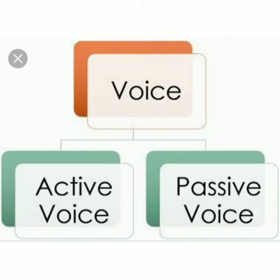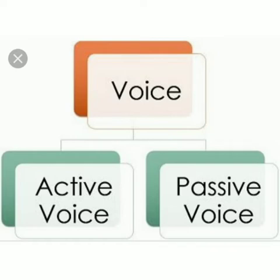The first sentence is in active voice because the hunter, the subject, does the action of shooting the tiger. The second sentence is in passive voice because the subject — the tiger — receives the action of being shot. In the first case the hunter is the subject; in the second case the tiger becomes the subject and receives the action. It is usual to use the active voice, but sometimes the person or thing that performs the action is unknown, unimportant, or not present — in such cases we use passive voice.